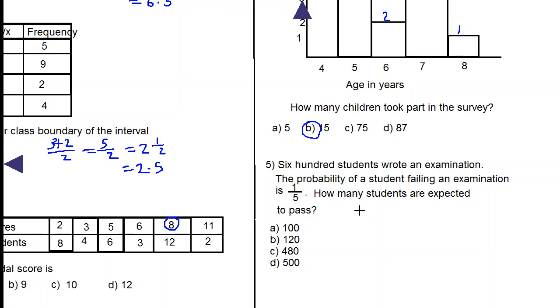If the probability of a student failing an exam is 1 over 5, then the probability of the student passing will be equal to 1 subtract 1/5, because the total probability is 1. So we have 4/5. The probability of a student passing is 4 out of 5.